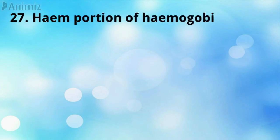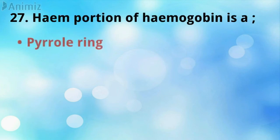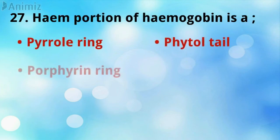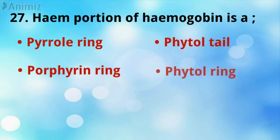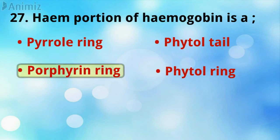The heme portion of hemoglobin is a — 4 is the correct answer.